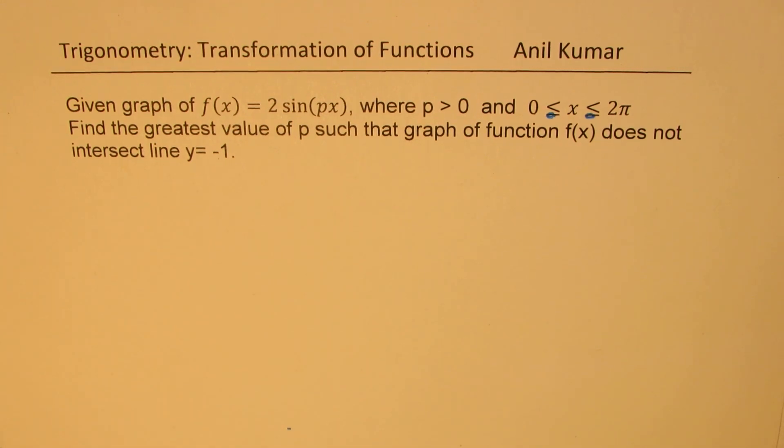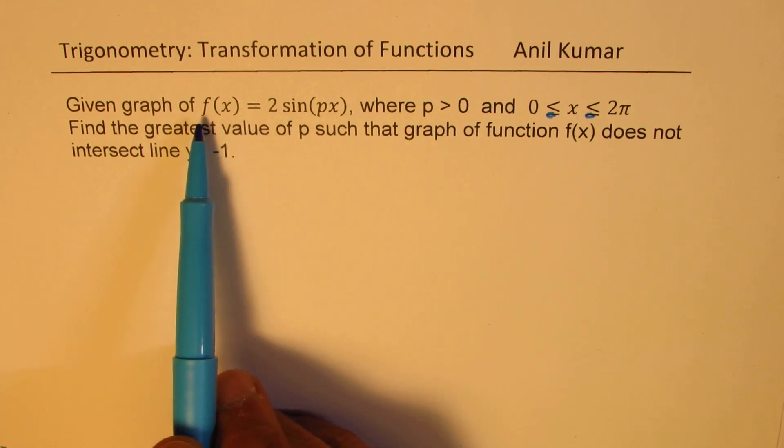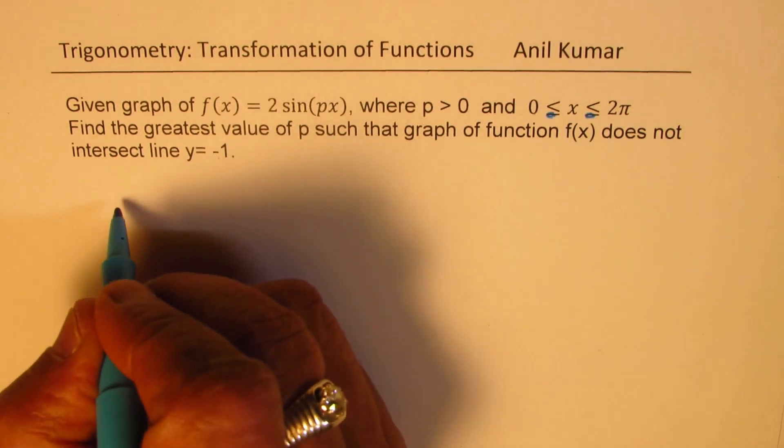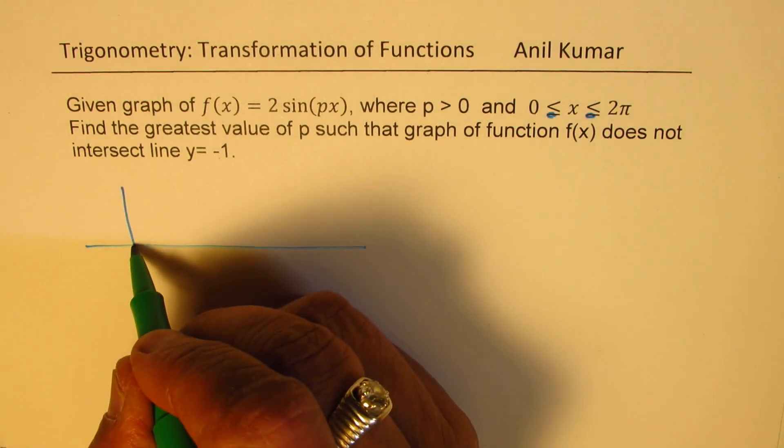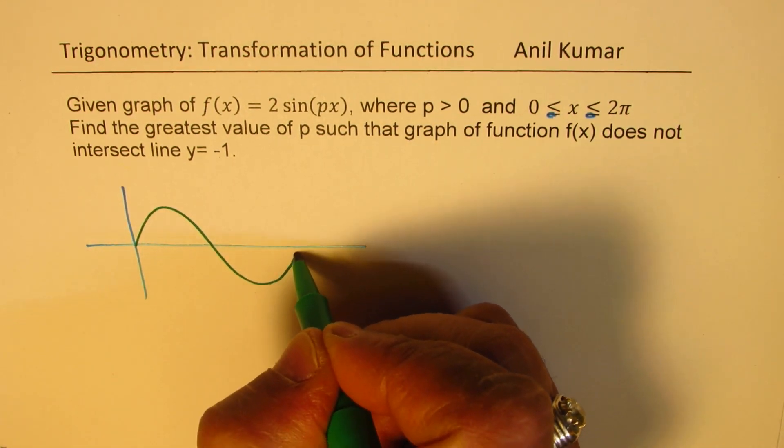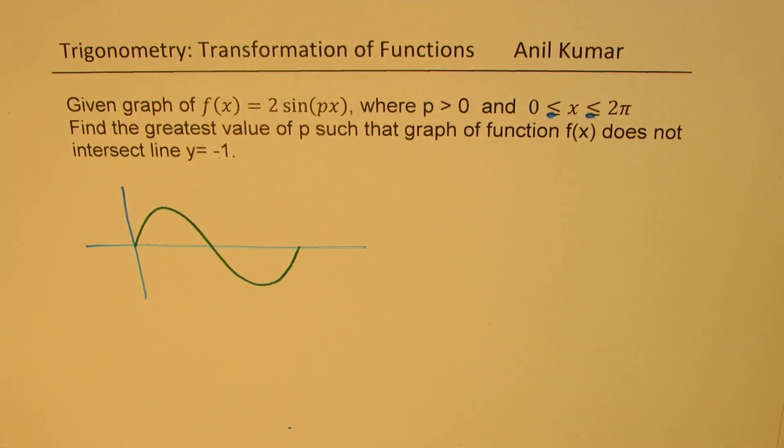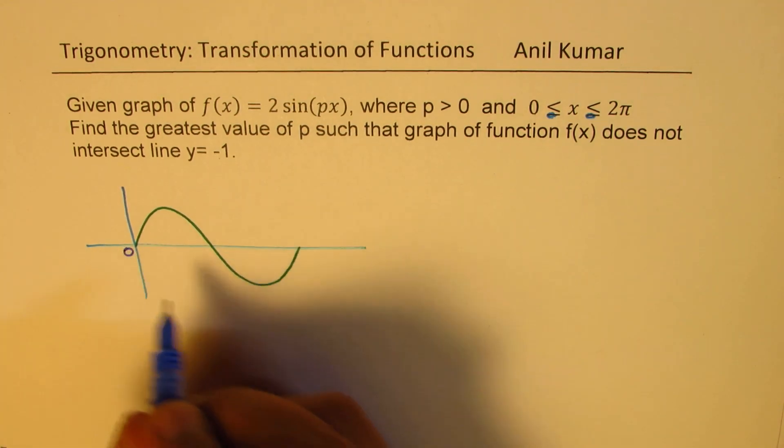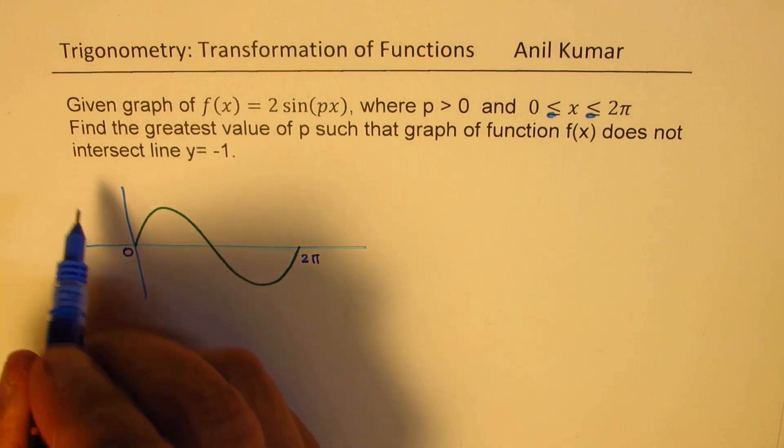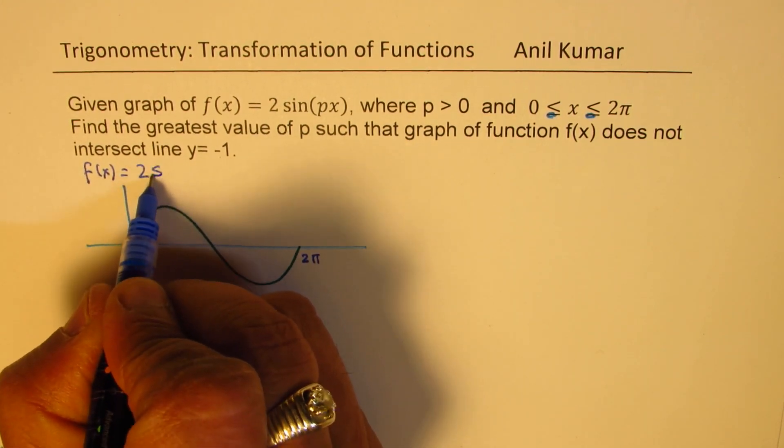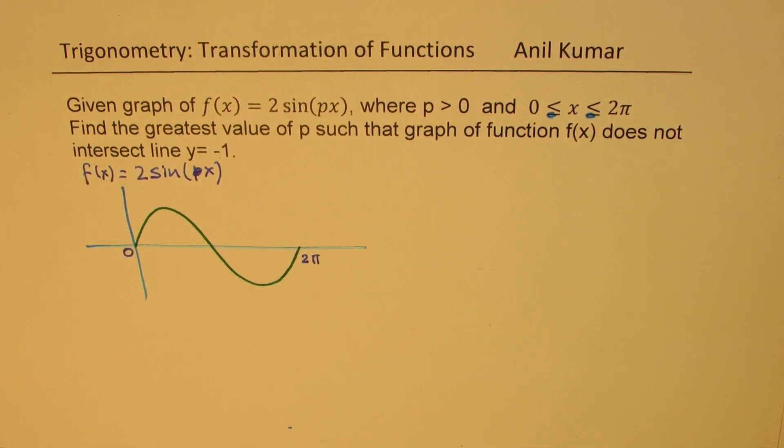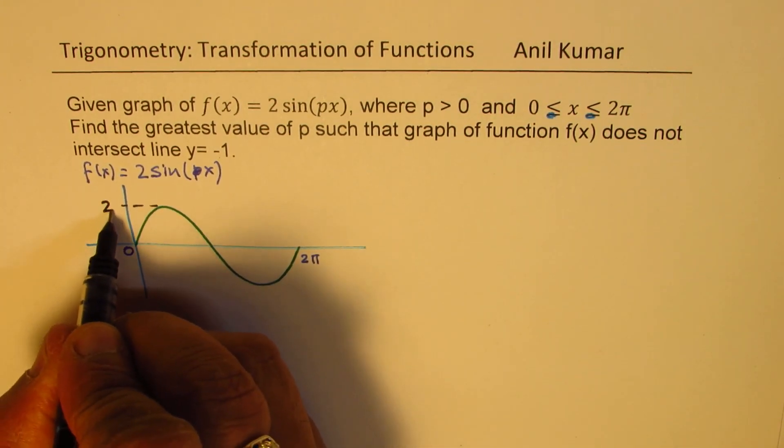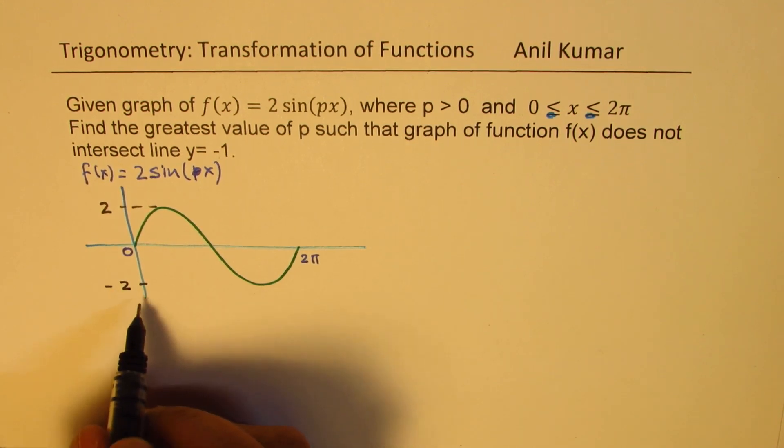Let us try to understand the basic concept first. We are given the graph of f(x), which is 2 sin(px). Let's sketch one. We will just sketch one sin wave which is kind of like this. Now, from 0 to 2π, you will notice that since f(x) is equal to 2 times sin(px), let me say sin(x). Let us say this is sin(x) graph. In that case, we have an amplitude of 2. So the minimum value is also minus 2. The maximum value is plus 2.